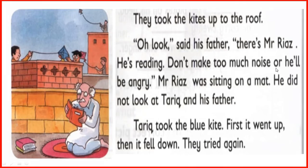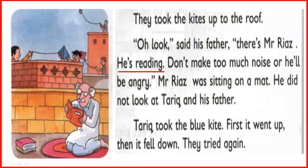'Don't make too much noise or he will be angry.' Mr. Riyaz was sitting on a mat. He did not look at Tariq and his father. Tariq took the blue kite — first it went up, then it fell down. They tried again. What was Mr. Riyaz doing? He was reading.